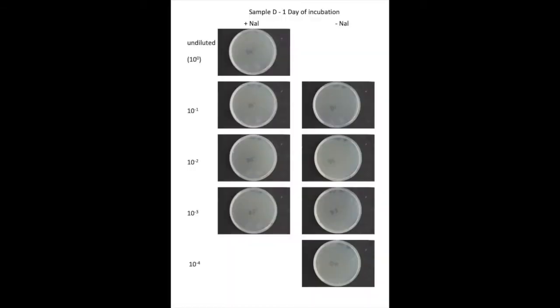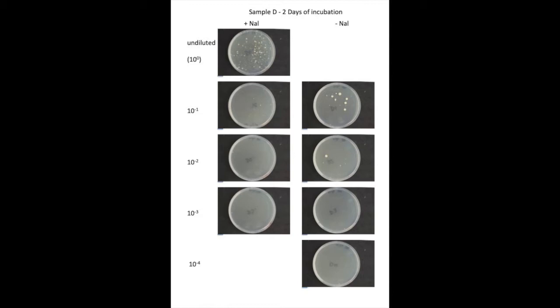Here are our dilutions of sample D after one day of growth at 30 degrees, and now after two days of growth. Colonies are only just starting to appear on the undiluted sample with nalidixic acid, and the 10 to the minus 1 dilution both with and without nalidixic acid. The number of colonies seems similar both with and without nalidixic acid, but the colonies are noticeably larger without nalidixic acid.